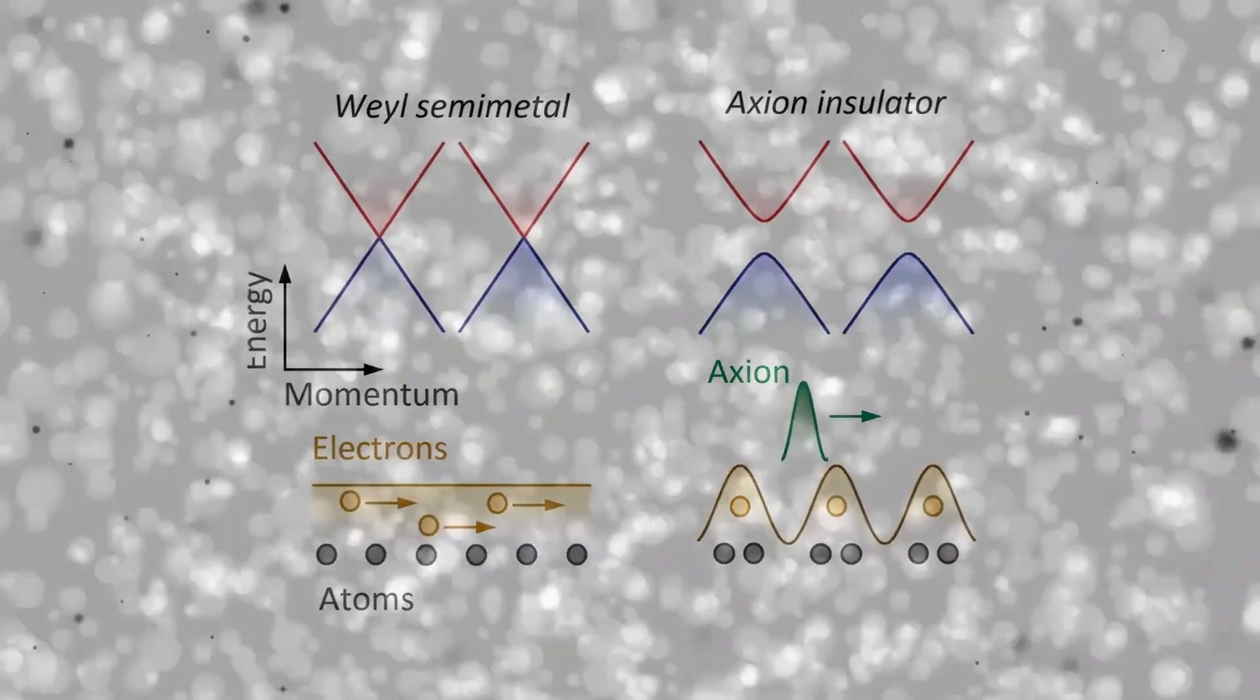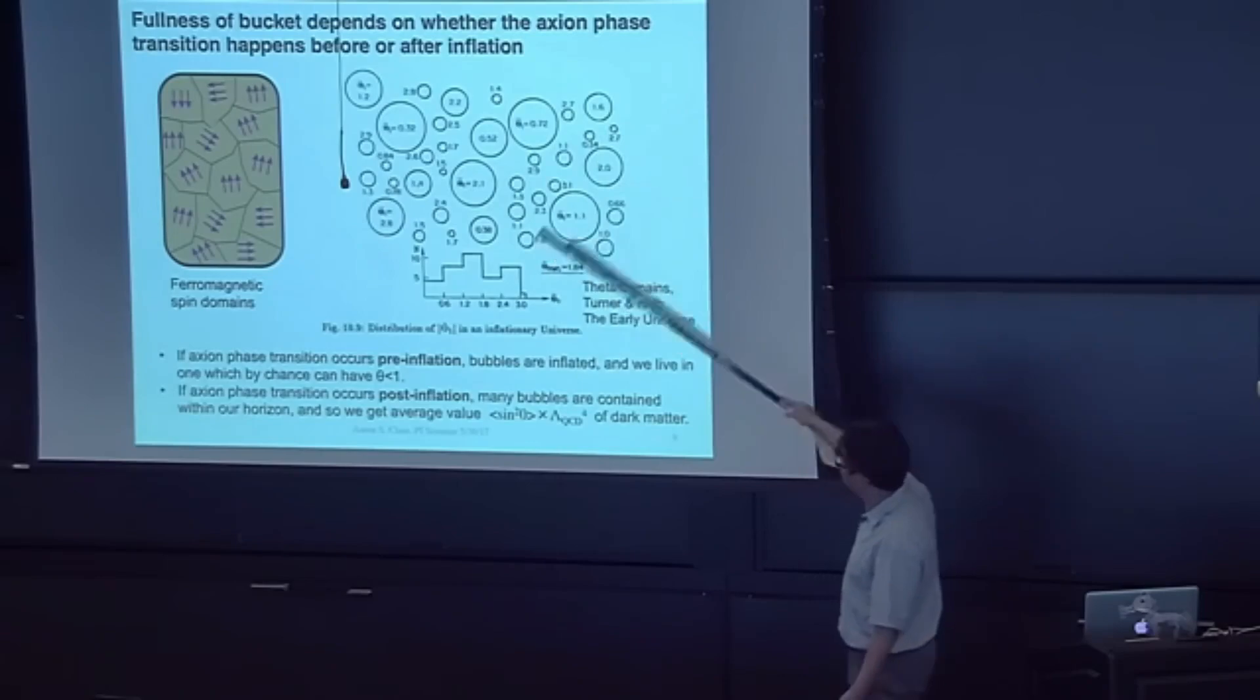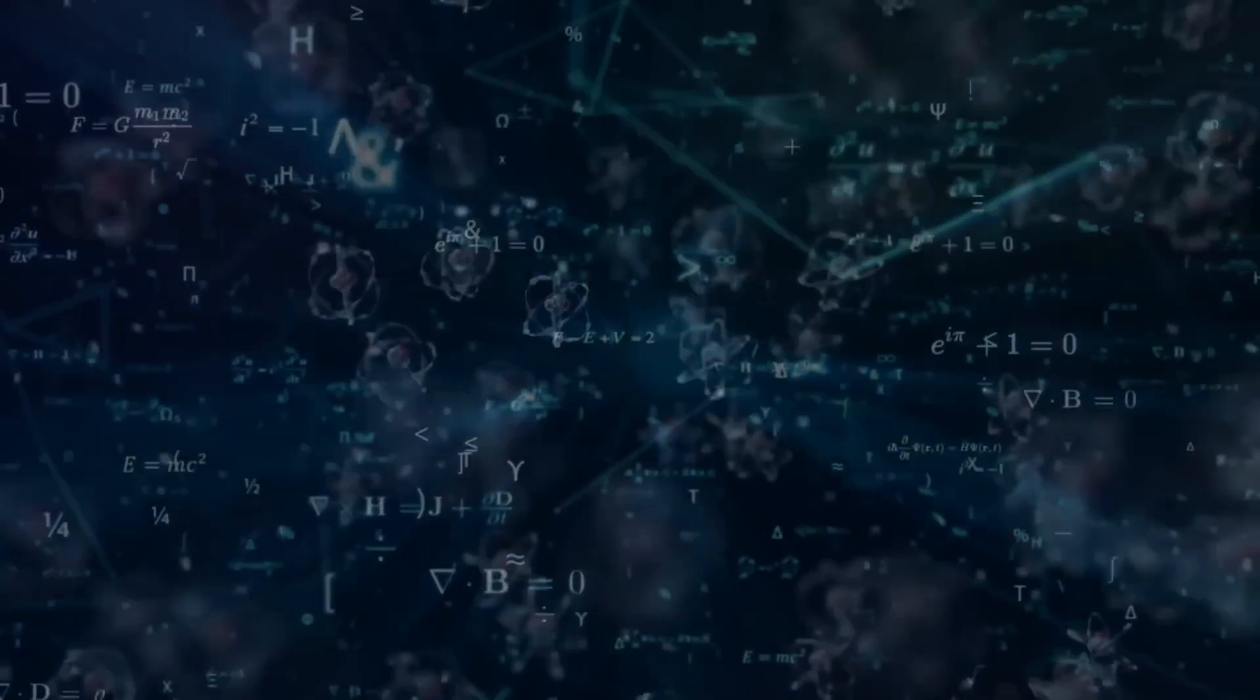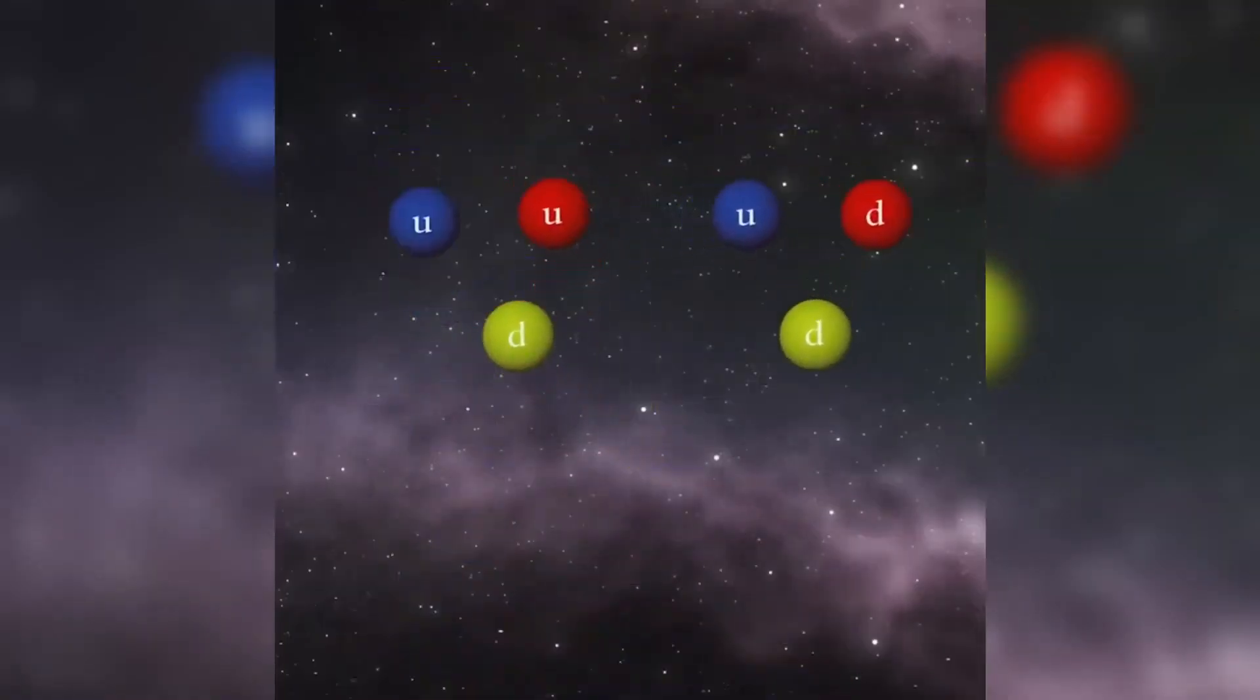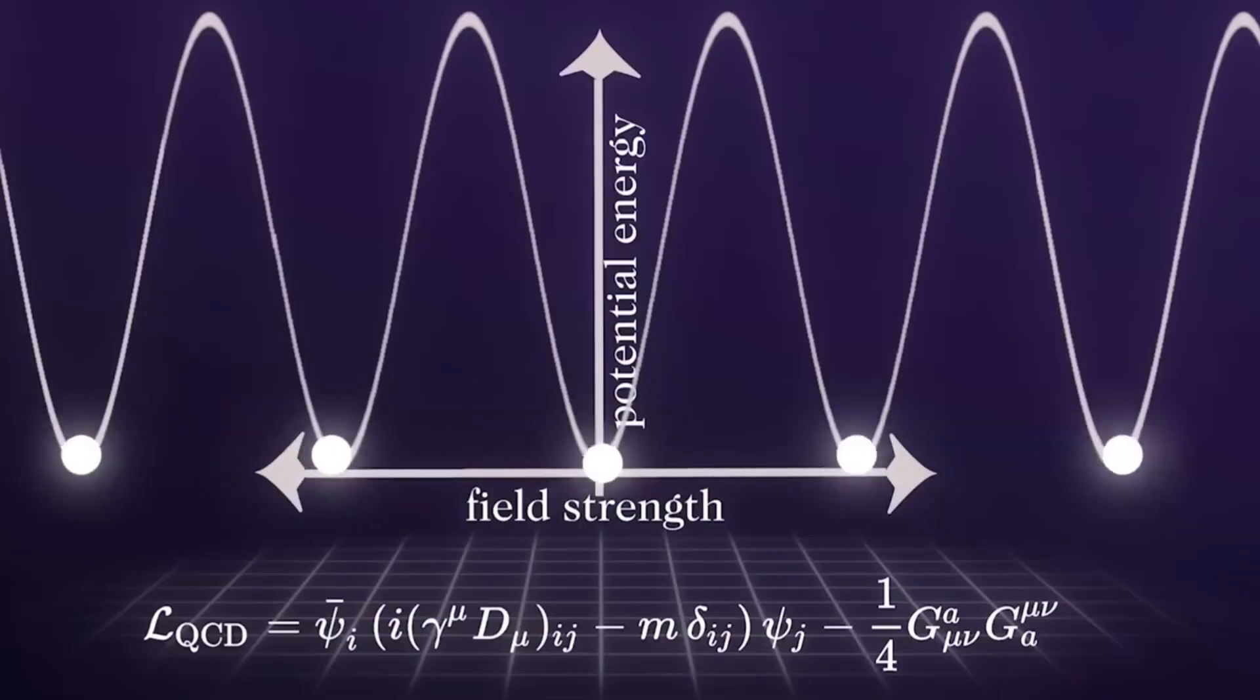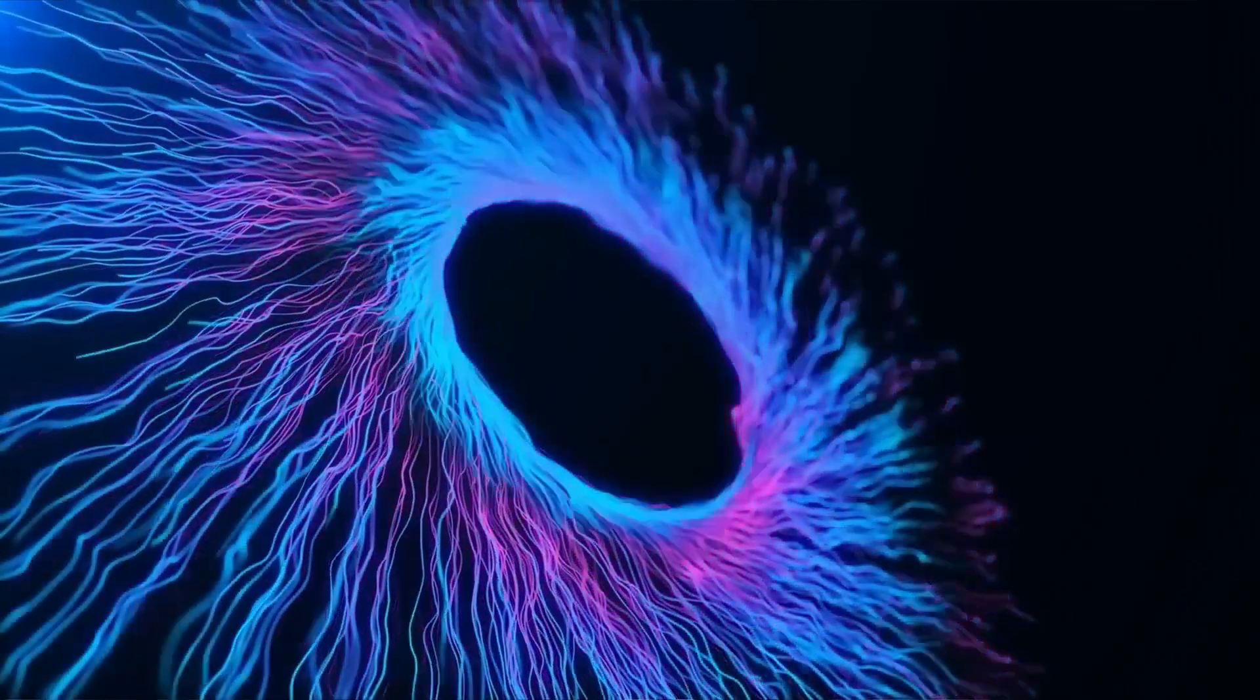There is also a growing theory that quantum entanglement, the phenomenon where two particles become mysteriously linked across vast distances, could be influenced by the presence of axions. Some physicists speculate that axions may act as a kind of cosmic glue, subtly shaping quantum interactions on a fundamental level. Then axions may not just be a missing piece of dark matter; they could be deeply woven into the very fabric of quantum mechanics itself.